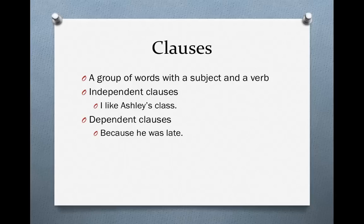Dependent clauses, on the other hand, cannot stand alone. They do not form complete sentences, but they still have a subject and a verb. For instance, 'because he was late.' Subject: he. Verb: was. But of course, this clause does not form a complete sentence. We would need something else — for instance, we could say, 'I couldn't attend the party because he was late.' We need an independent clause attached to it.